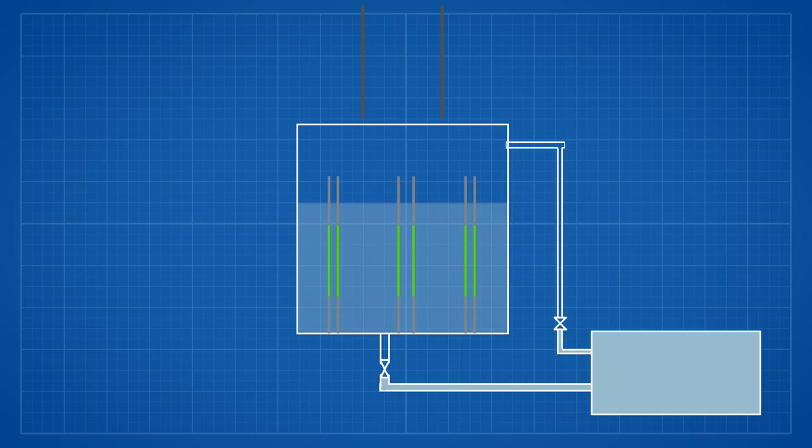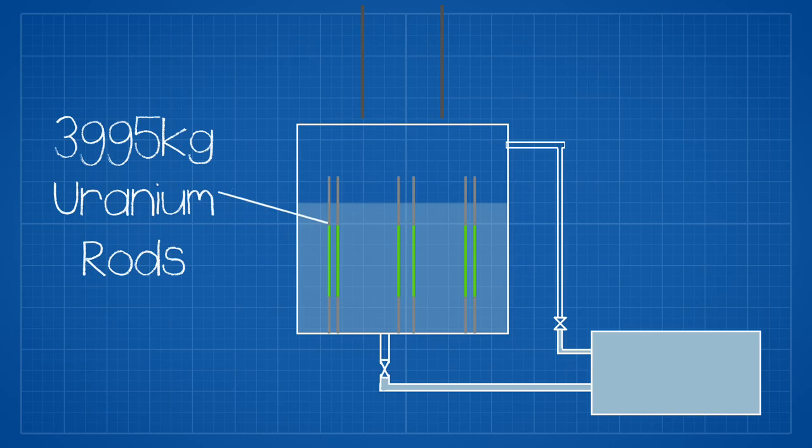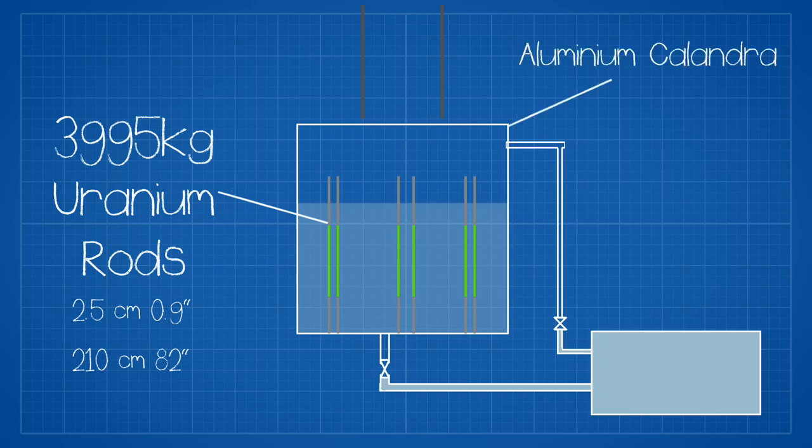The reactor made use of roughly 4 tons of natural uranium in the form of 216 aluminium clad fuel rods. Each rod was 2.5 centimetres in diameter and 210 centimetres long. The fuel rods, with a lattice spacing of 12 centimetres, were contained in a cylindrical tank made of aluminium of 1 centimetre thickness.